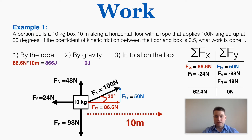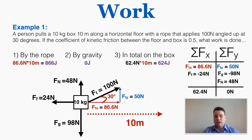To find total work done on the box, I use the net force in the work equation. The net force points only in the horizontal direction — the same direction as the displacement — so the angle is 0 and cosine is 1. Multiplying the net force of 62.4 by the displacement of 10 gives 624 joules of total work. This is lower than the rope's work because friction adds negative work; adding that negative work to the positive work from the rope gives 624 joules total.